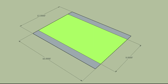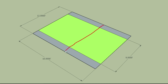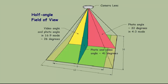The field of view vertically for video and for photos in 16:9 format is about 52 degrees. It is about 66 degrees for 4:3 stills. The half angles are 26 degrees and 33 degrees respectively. The horizontal field of view is about 82 degrees, with a half angle of about 41 degrees in both photo and video mode.